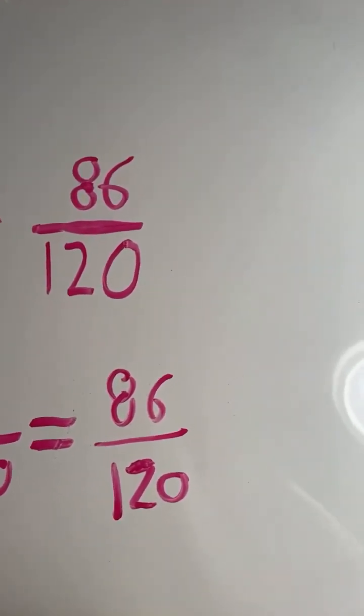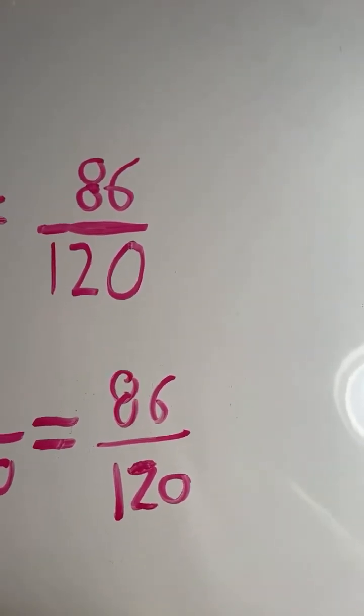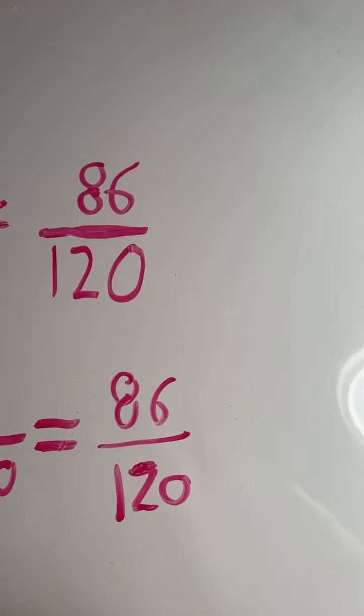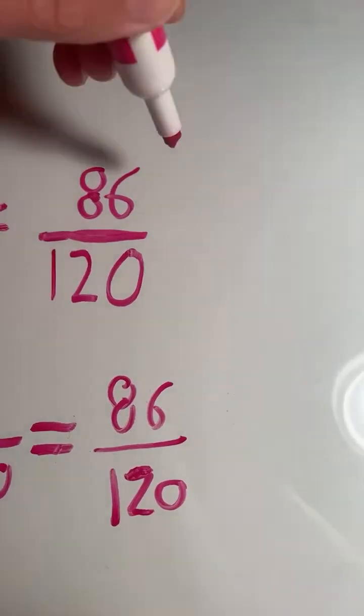So since I don't know the greatest common denominator off the top of my head, I'll just pick a common factor to divide by. So 2 is a common factor between 86 and 120. So I will divide by 2.